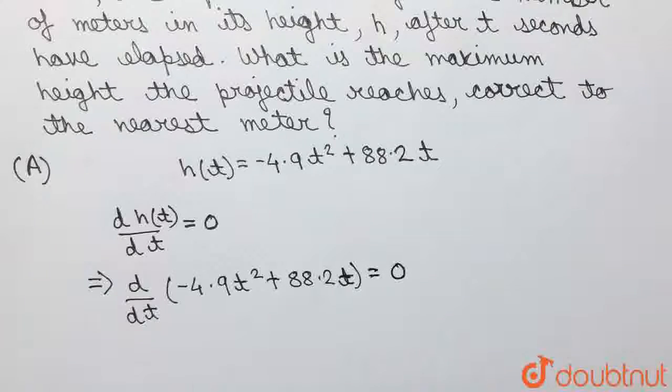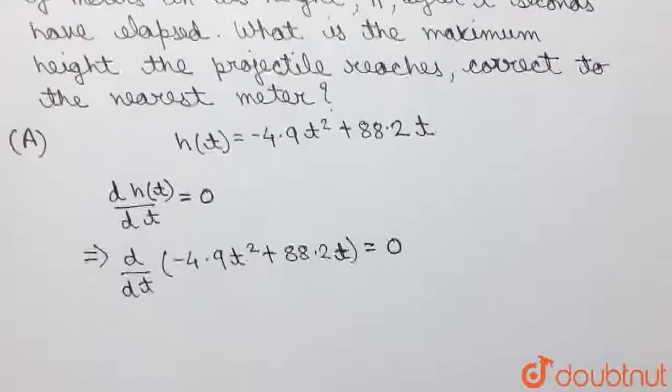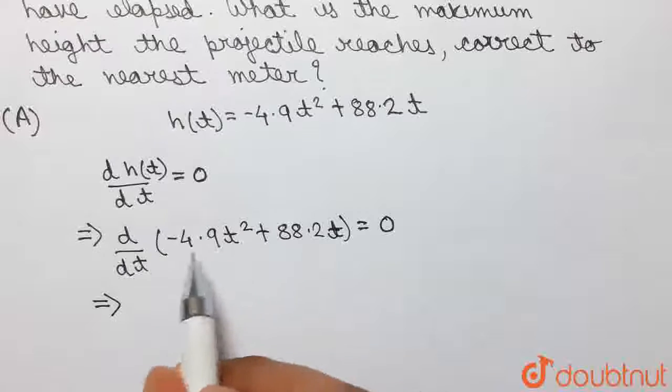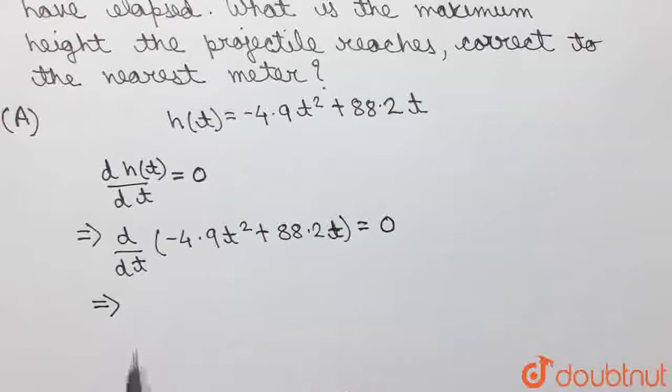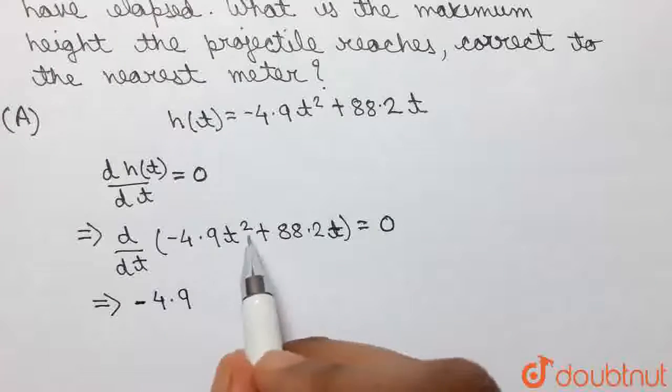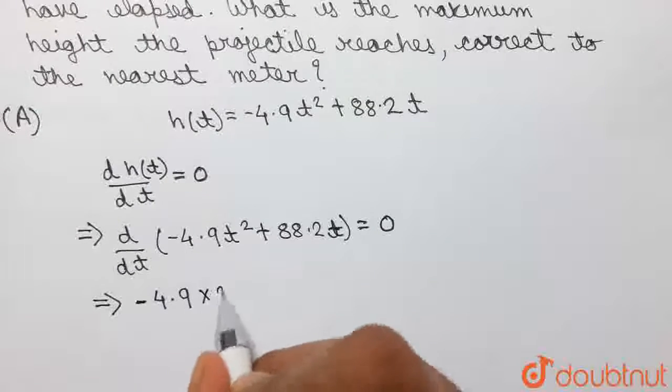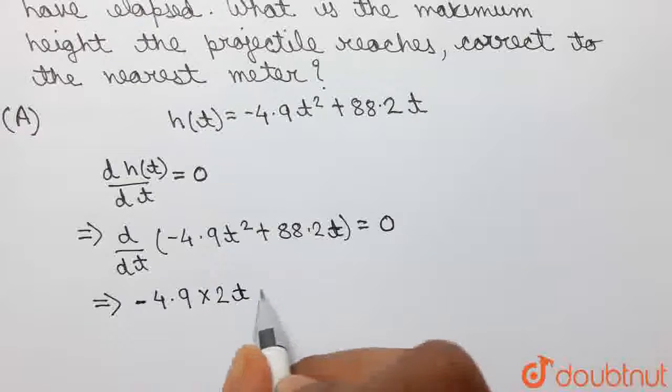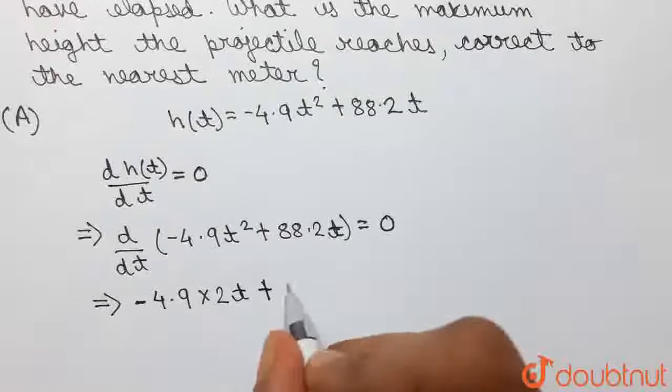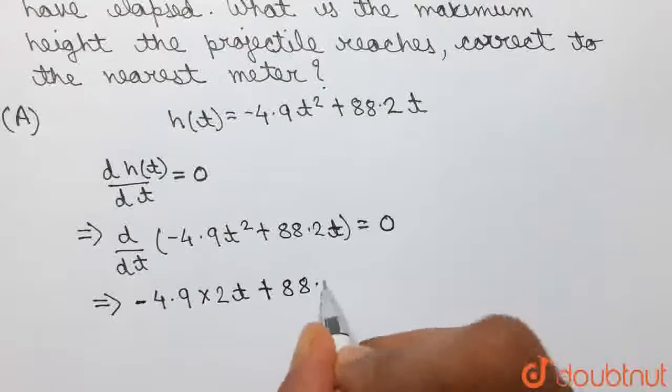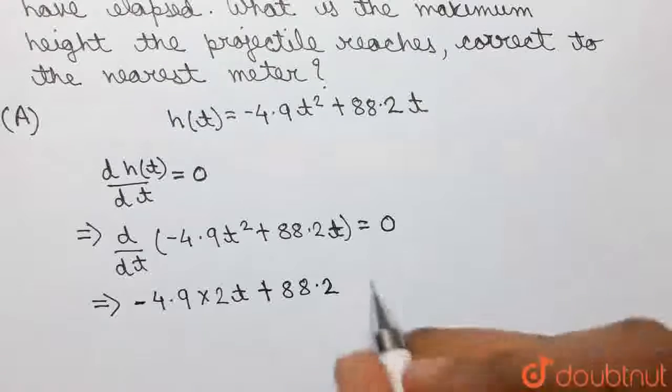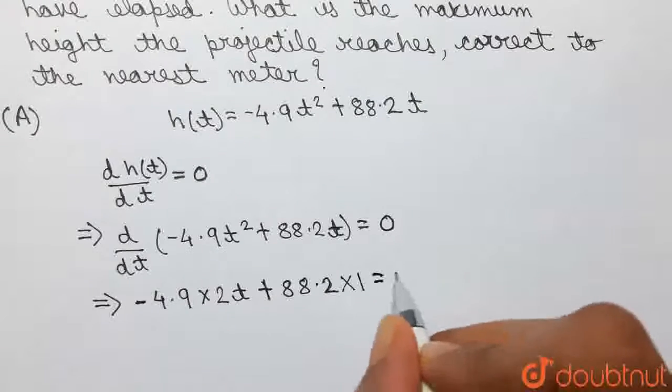So, differentiating these two terms, first of all, for this term -4.9t², -4.9 is a constant which will come out and the derivative of t² will be 2t. And for the second term, 88.2t, 88.2 being a constant will come out and the derivative of t with respect to t is 1, equal to 0.